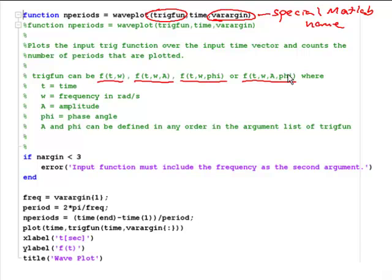When we write a function like this, one thing we want to do is have some error checking with our inputs to make sure we're getting what we expect. This is another special MATLAB variable, nargin, which stands for number of arguments in. Here we're checking that we have at least three arguments in: trigfun, the function we're going to be evaluating, the time vector, and the frequency.